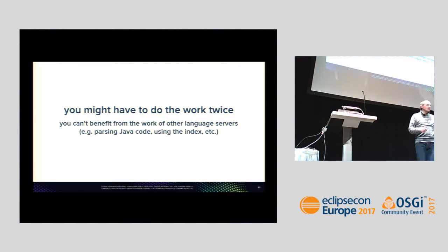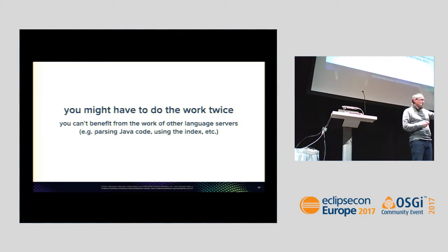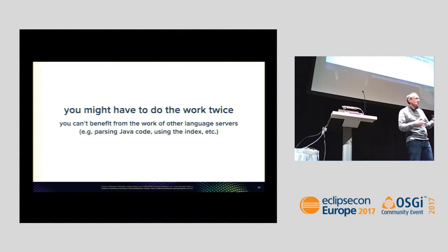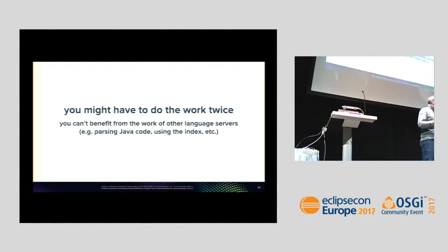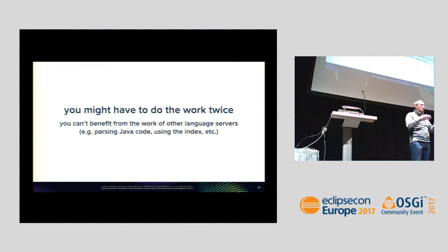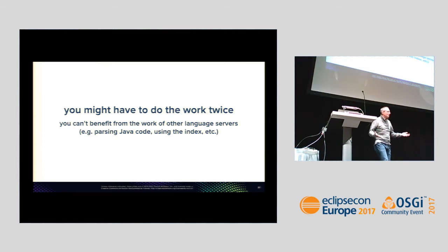The question is: can my server be the client for another server? Technically, that could be possible. But is it faster to parse source code ourselves, or to talk to the Java language server, make a custom extension, ask for an AST, serialize it into JSON, send it over? You'd save parsing time but spend time on serializing, deserializing, and transferring. It's an open question whether language servers should communicate among each other.